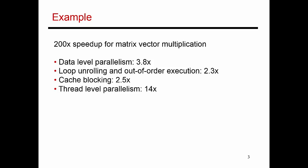Subsequent chapters will talk about loop unrolling and out-of-order execution, which is a hardware technique to improve performance — that adds another 2.3x. We'll then talk about the memory hierarchy and how a technique such as cache blocking can further improve performance by 2.5x. Finally, leveraging multi-core processors and thread-level parallelism gives a 14x improvement. As you go through the different chapters, you'll be introduced to various innovations that together can provide a 200x boost in performance — performance you would not have without a deep understanding of the hardware.